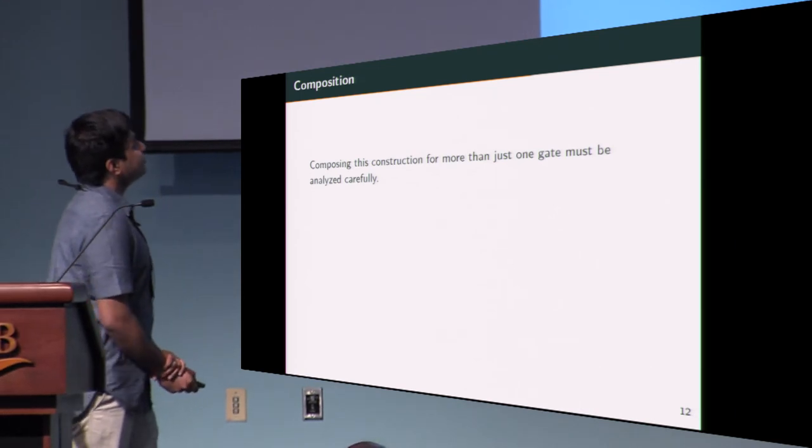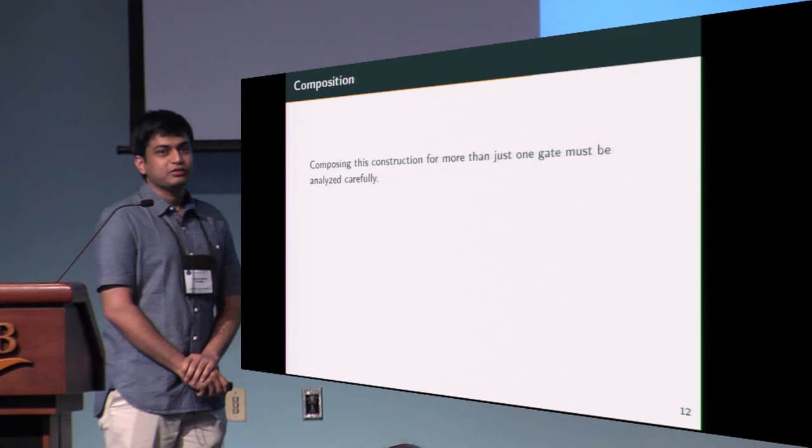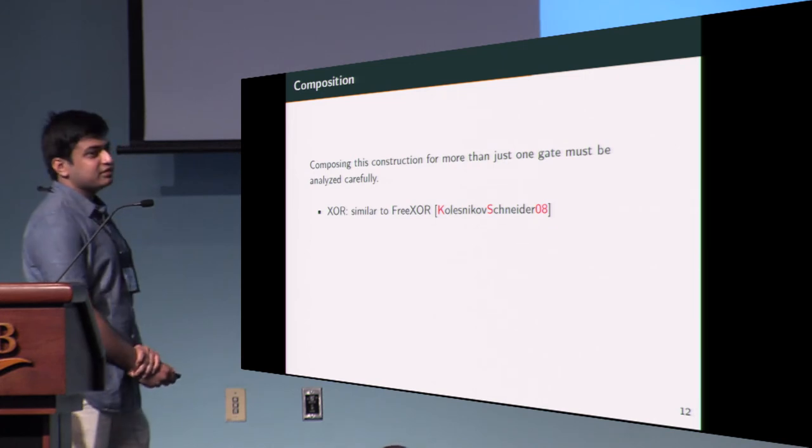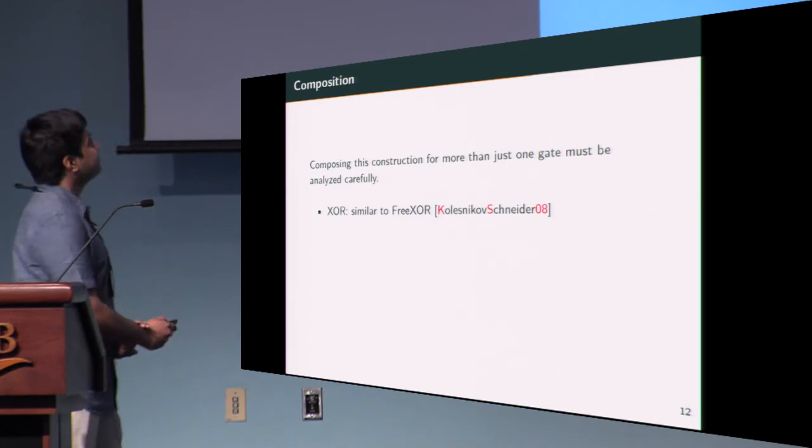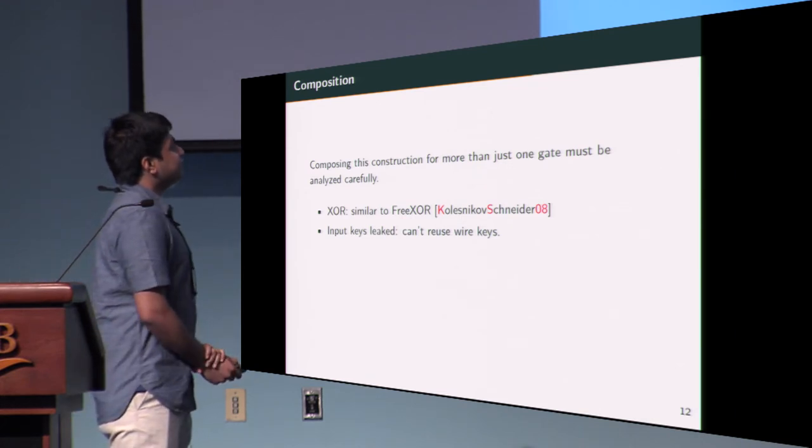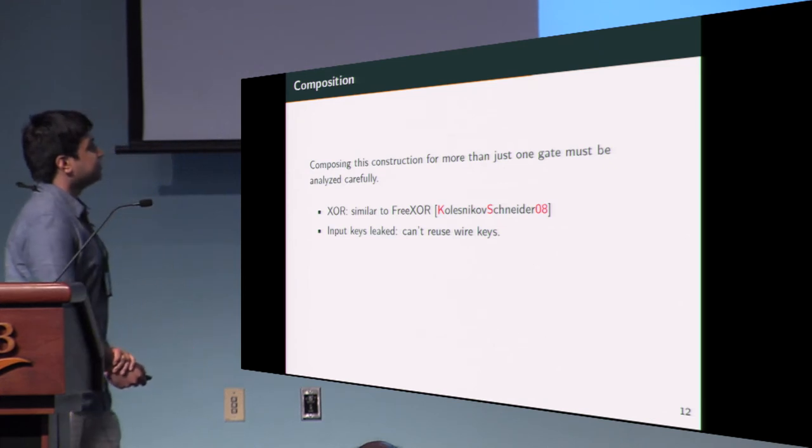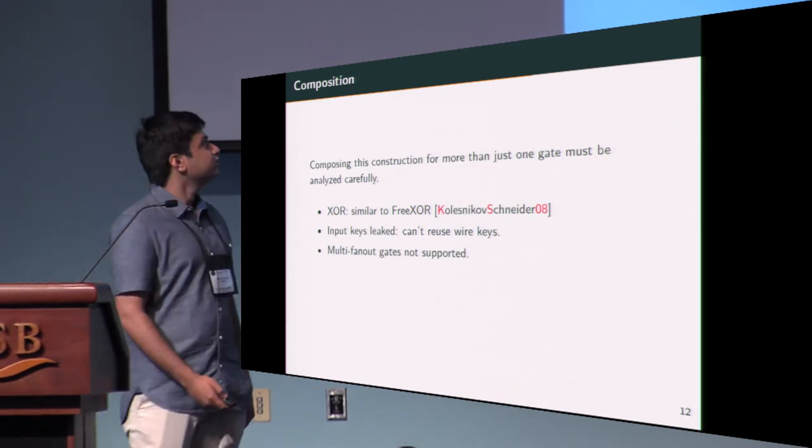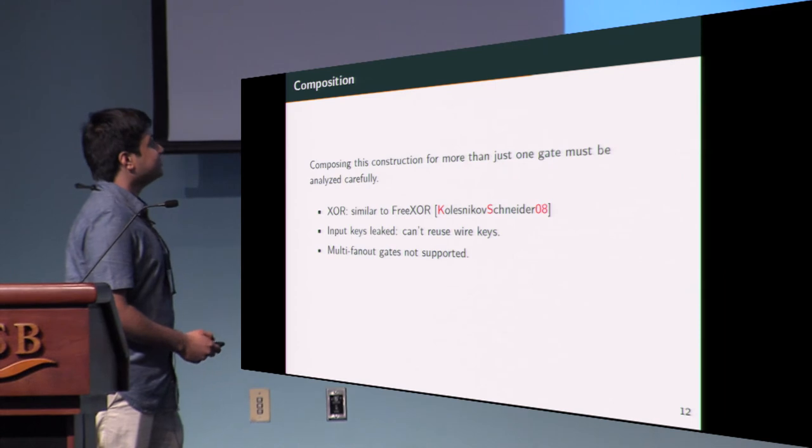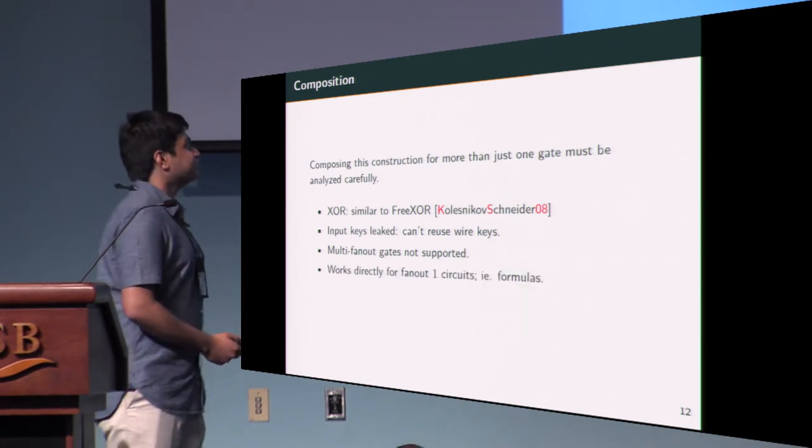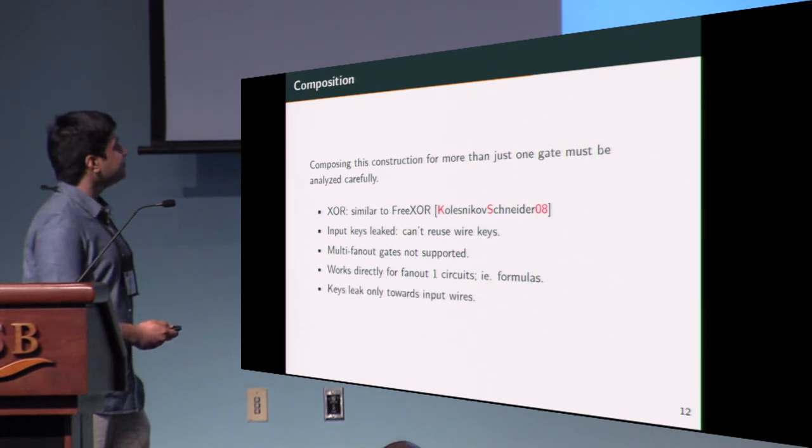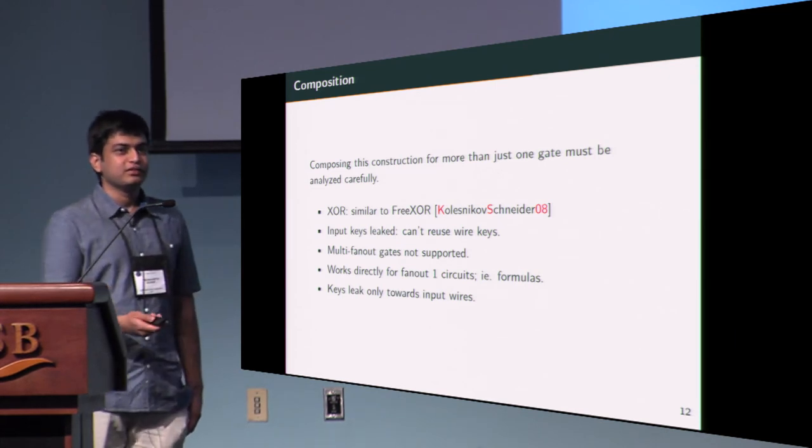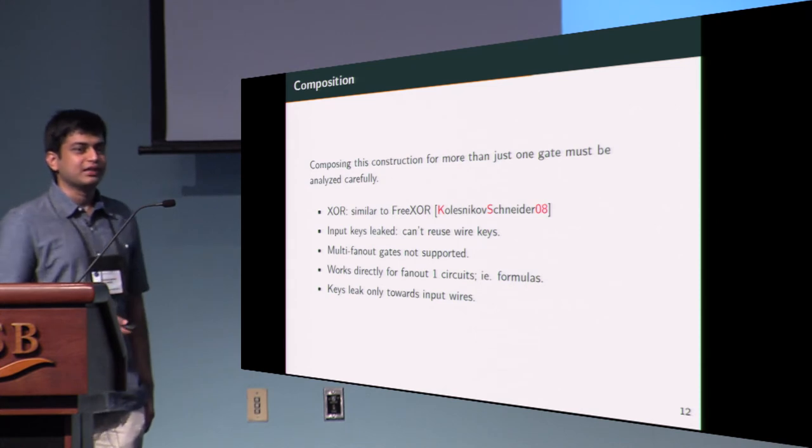Composition is an issue because we leak keys on certain input wires, so it's something we need to consider carefully. First of all, XOR is the same as free XOR, very similar to free XOR. One of the effects of leaking the input keys is that we can't reuse the wire keys across different gates, so multi-fanout gates are a problem for our construction. However, we can prove that this construction composes to garble formulas directly, that is, circuits where all gates are fan-out one. This is because, intuitively, the keys only leak towards the input wires; the keys don't leak towards the outputs. Only if you evaluated a gate already can you derive keys on wires before it.